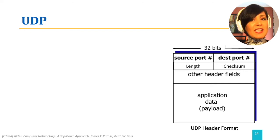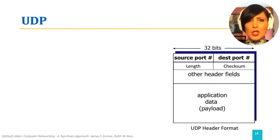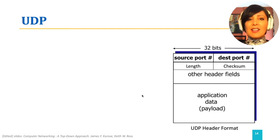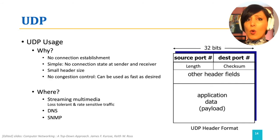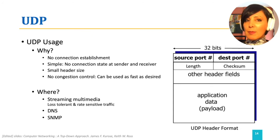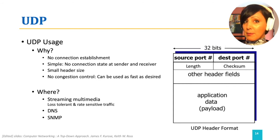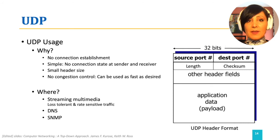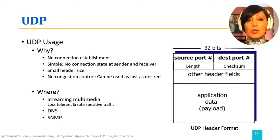You might ask: if UDP is not providing anything other than multiplexing and demultiplexing, why should we choose for an application to use UDP over TCP? UDP does not establish or maintain a connection. Therefore, it does not impose additional delay to the communication, and it is a lot simpler. It has a very small header, as we saw, and therefore it does not introduce massive overhead to the communication.